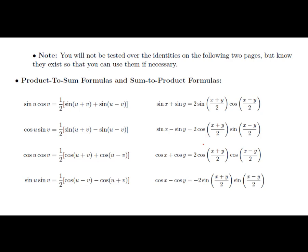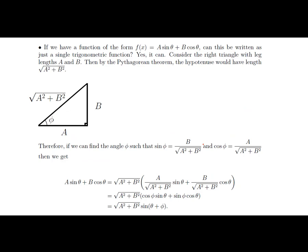The last two slides show additional formulas that you don't need to memorize — I won't test you over them. But I want you to know they exist: you can take products of sines and cosines and write them as sums, and you can take sums and differences of sines and cosines and write them as products. There's also a formula for writing the sum of a sine and a cosine as the sine of a sum of two angles. These are available if you ever find the need.